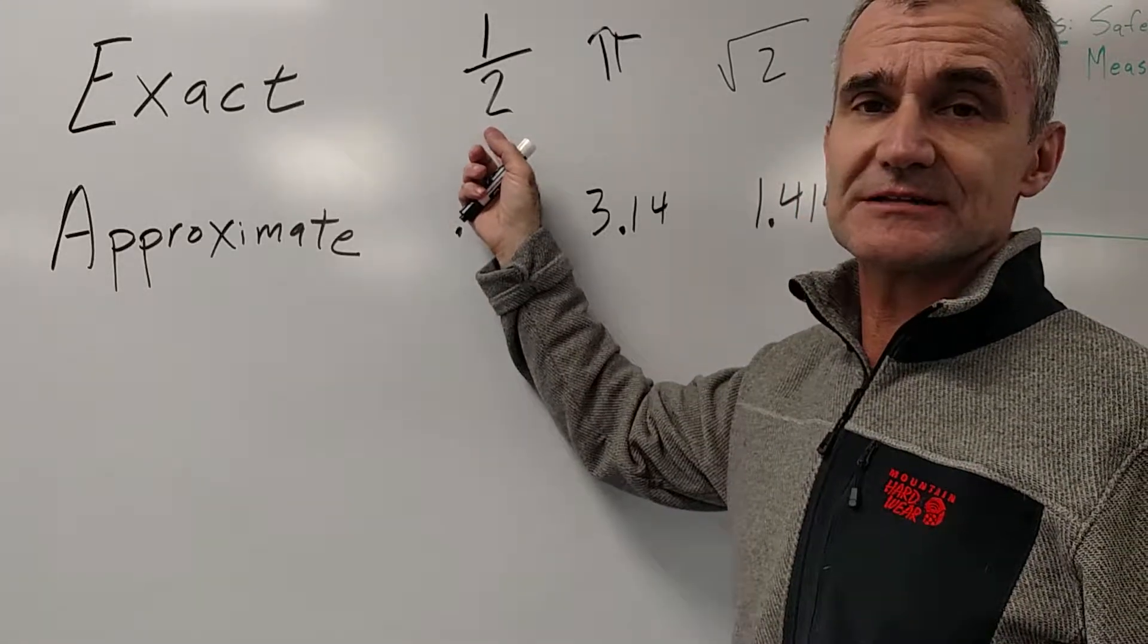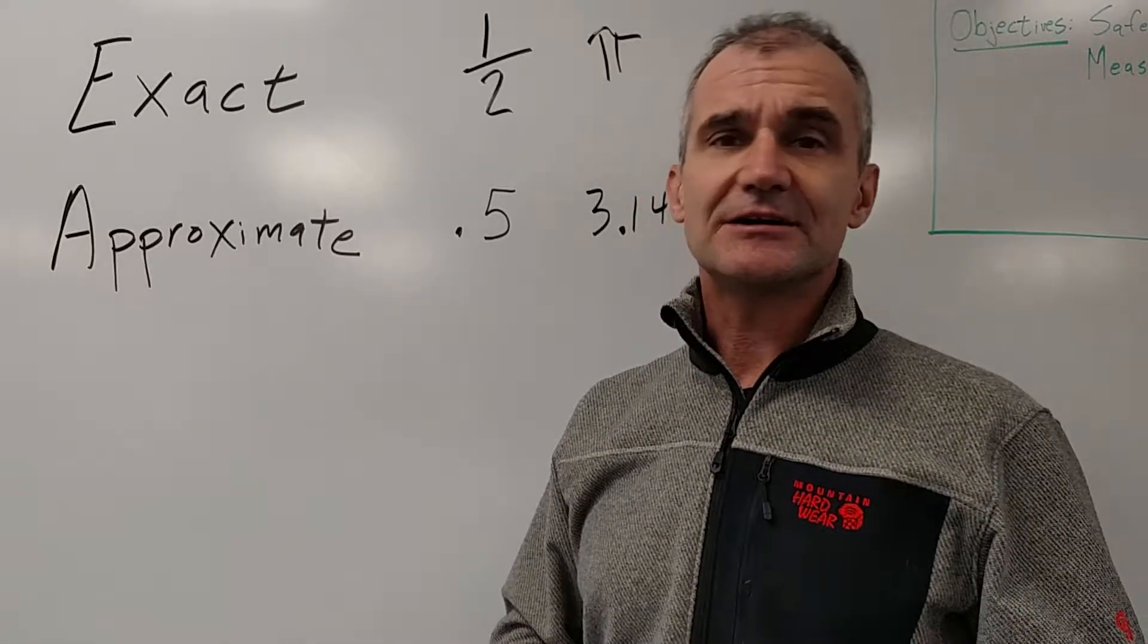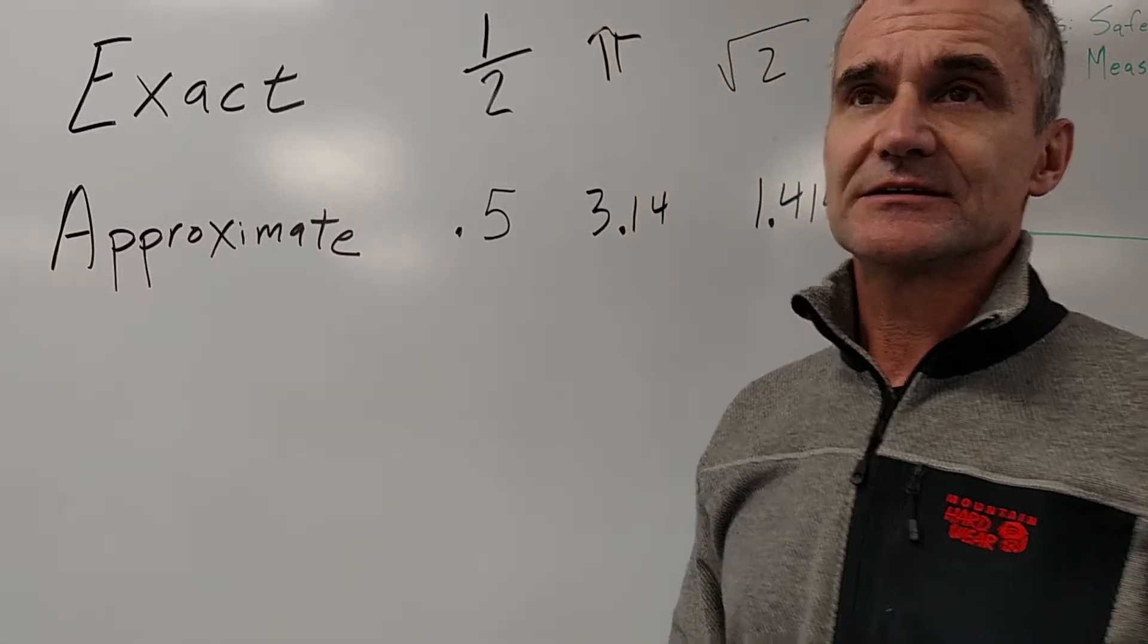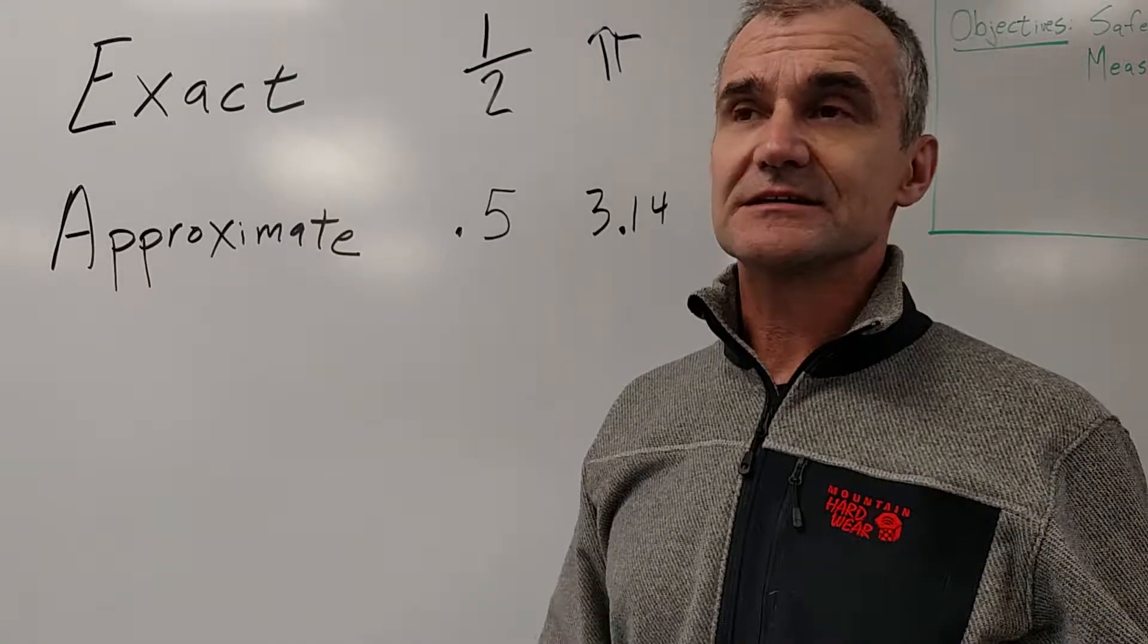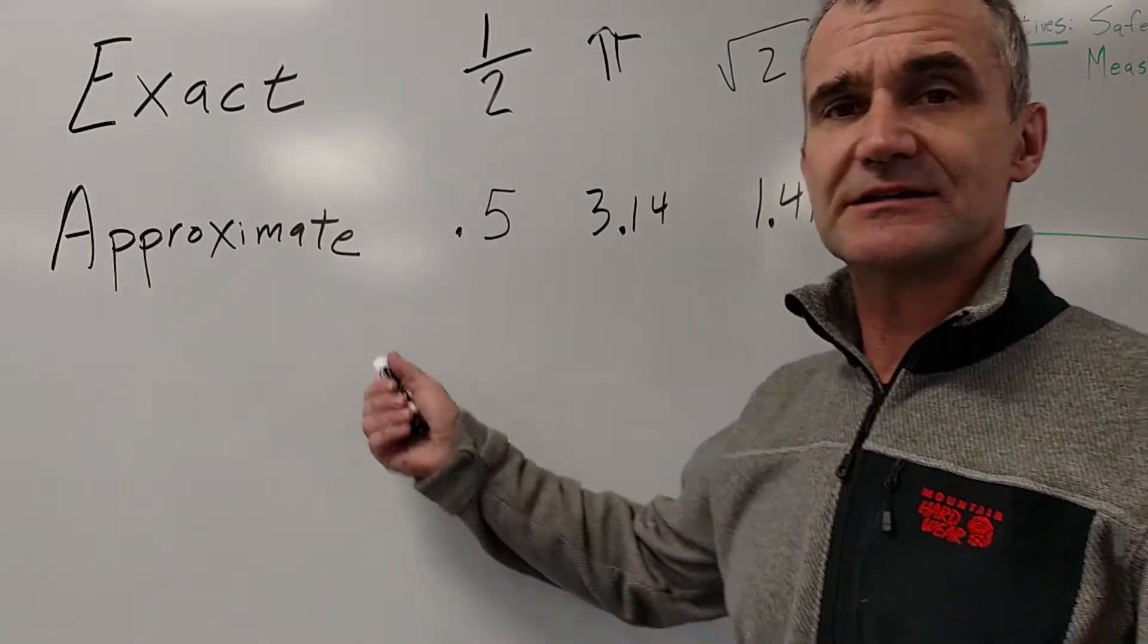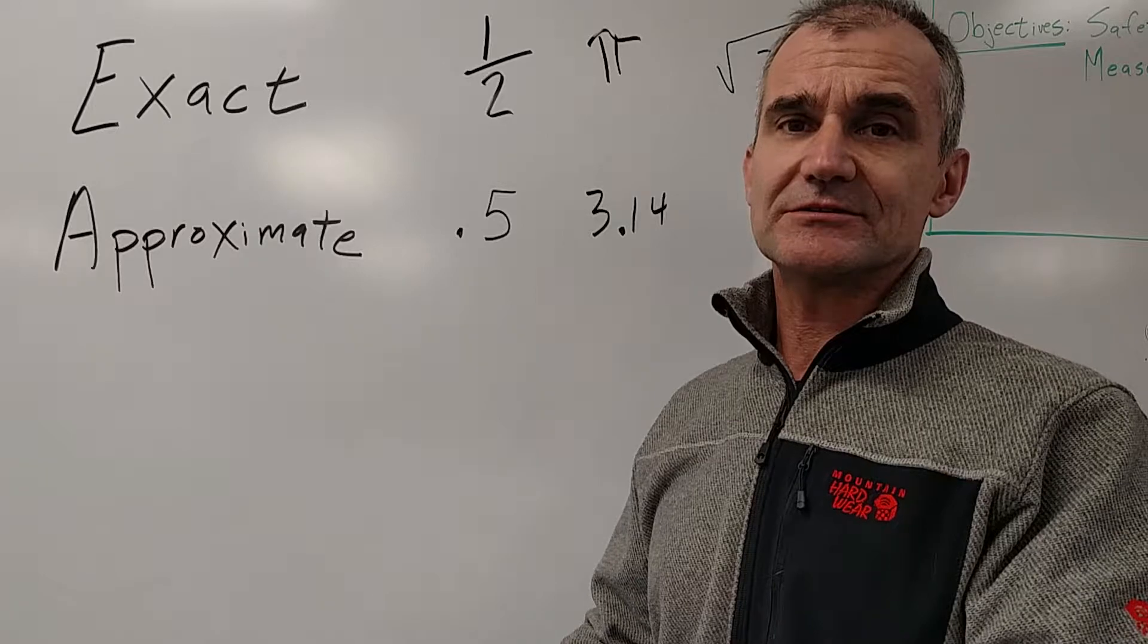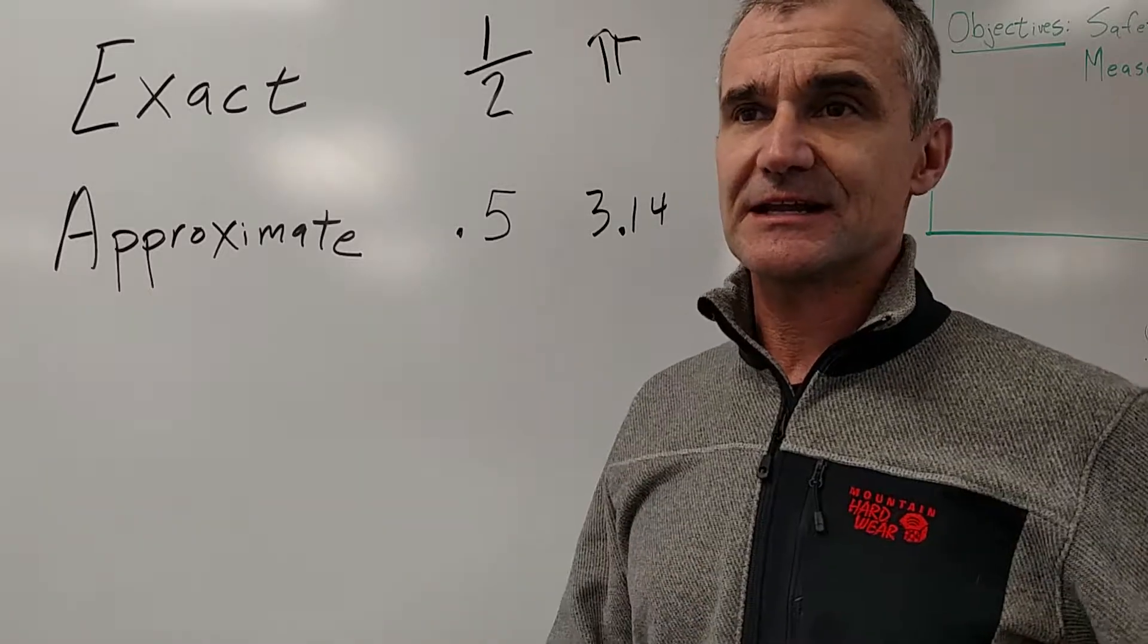And if you leave it in an exact value answer, like on a 30, 60, 90 triangle, and you're asked for the sine of 30 or the sine of 60, sine of 60 would be root 3 over 2. That's always better than the decimal approximation because it shows that you know that triangle and it shows that you have understanding of that idea.